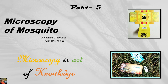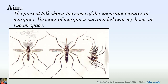This mosquito structure was seen under Foldoscopic technique developed by Manu Prakash. The Foldoscope product I used is 00025E6172FA. The aim of this lecture is to show some important features of mosquitoes. Varieties of mosquitoes from nearby homes, vacant spaces, or dustbins were collected, and microscopic images were taken. Here are three images showing three mosquitoes — you can see the structures of the three mosquitoes are different.